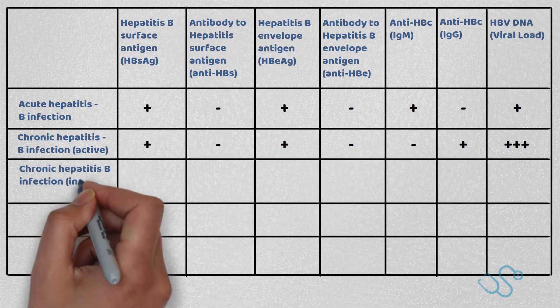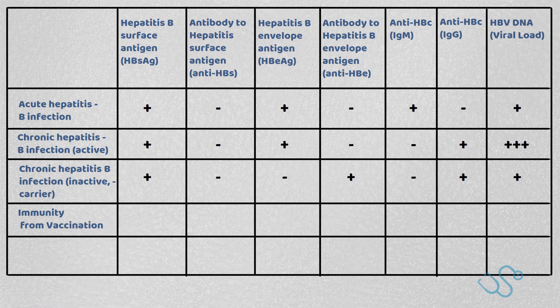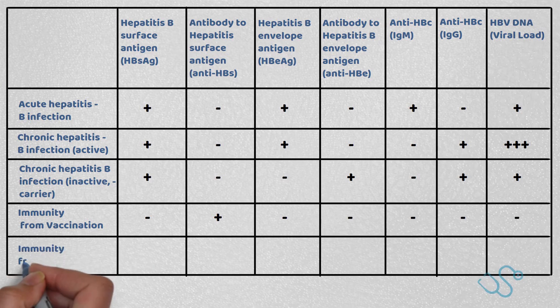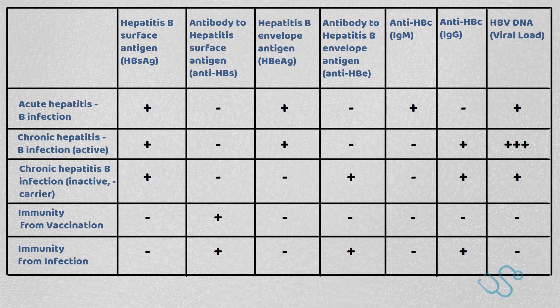If you're a Hepatitis B carrier, you'll have the surface antigen, the antibody to the envelope antigen, the IgG antibody against the core antigen, and a lower amount of DNA viral load. For immunity from immunisation, you'll only see the antibody against the Hepatitis B surface antigen. For immunity from a previous infection, you'll see the surface antigen antibody, the envelope antigen antibody, and possibly the IgG antibody against the core antigen.